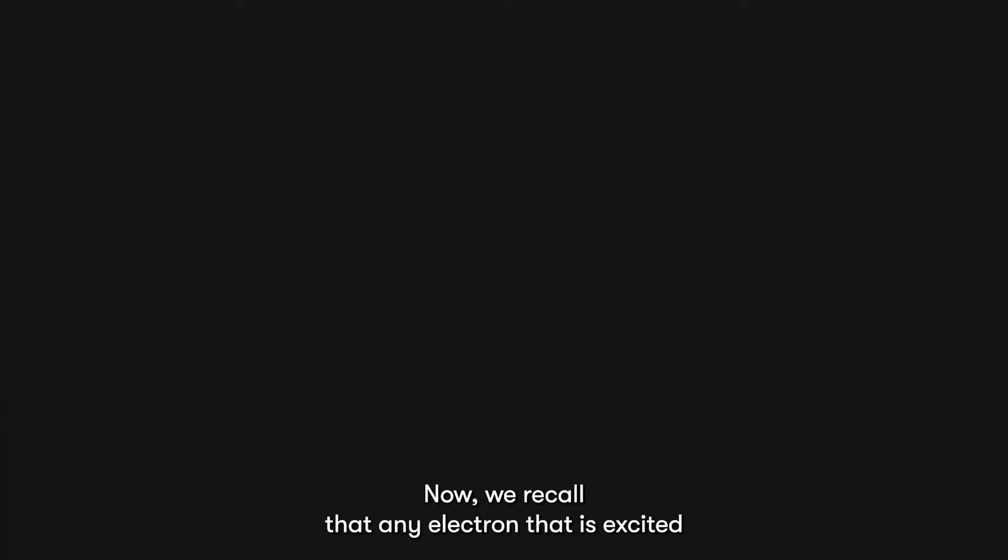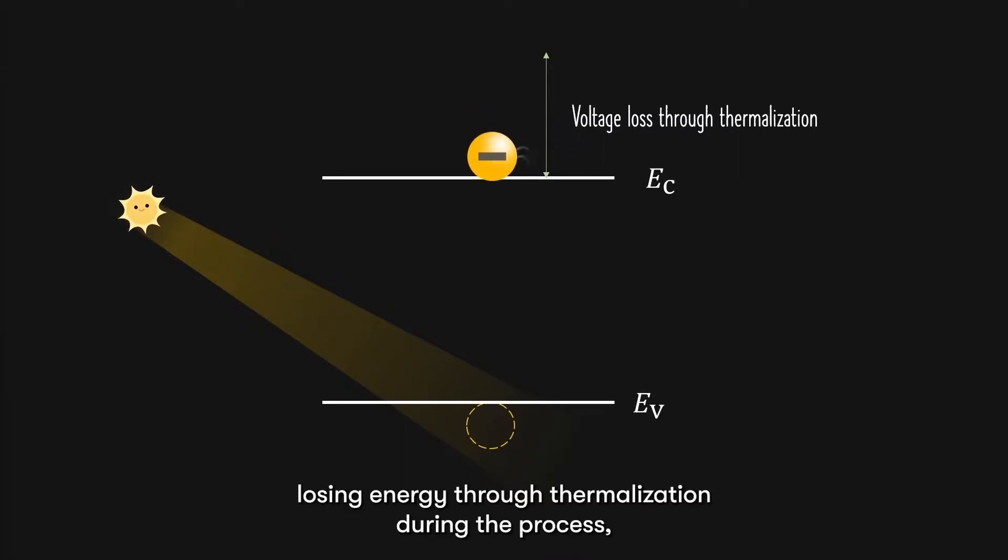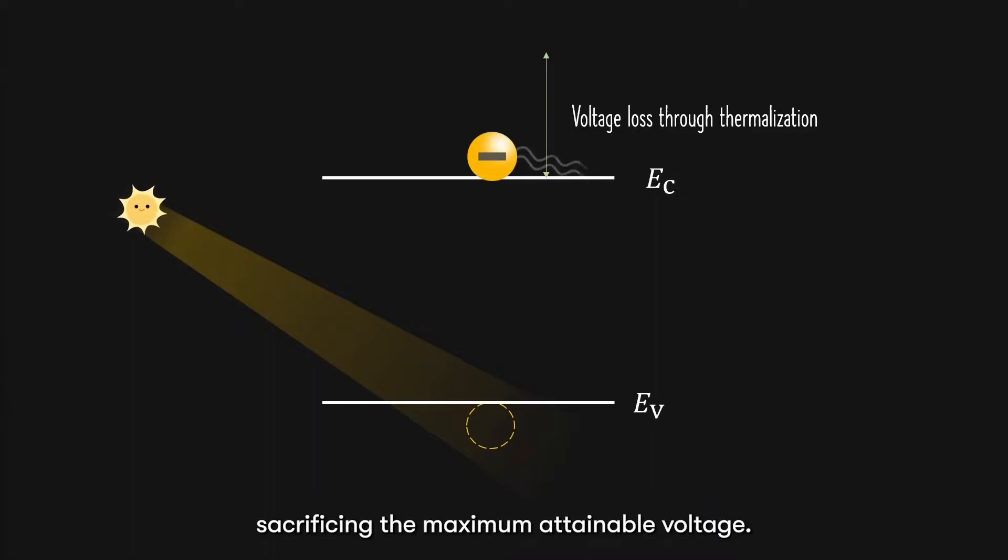Now, we recall that any electron that is excited higher than the energy band gap will relax down to the edge of the conduction band, losing energy through thermalization during the process, sacrificing the maximum attainable voltage.